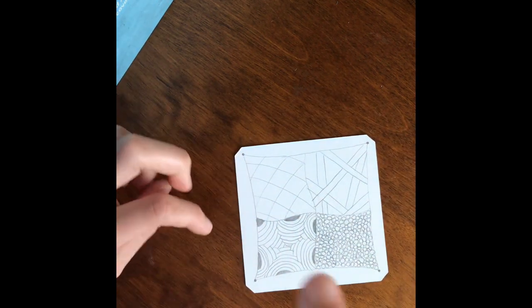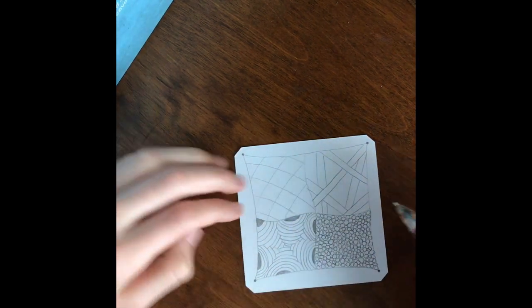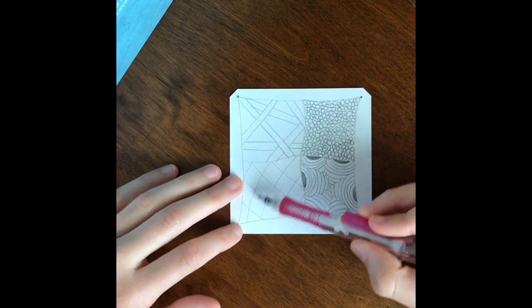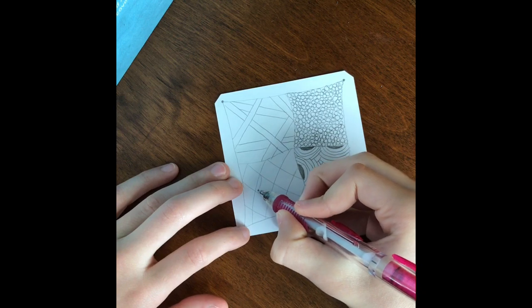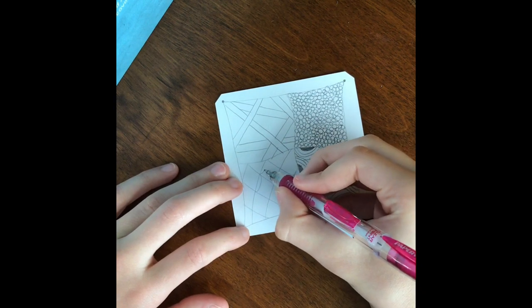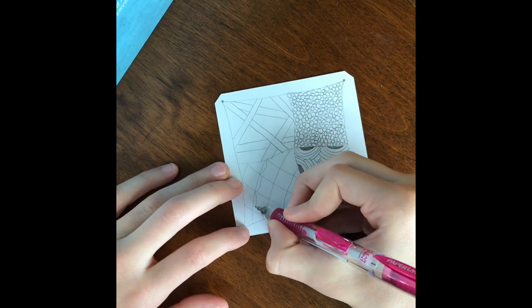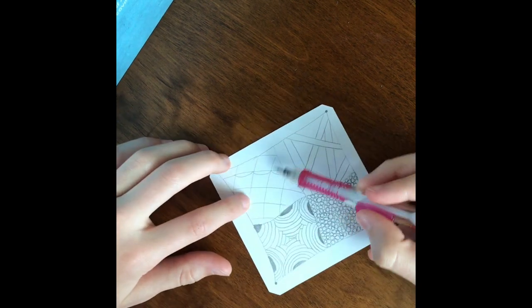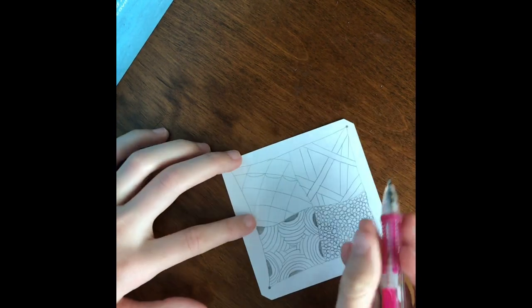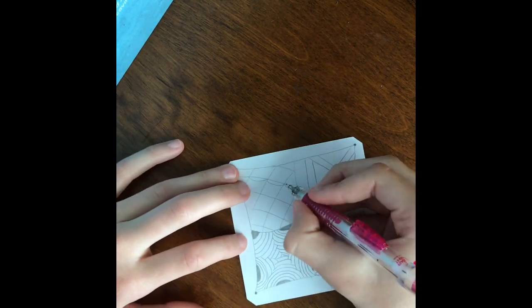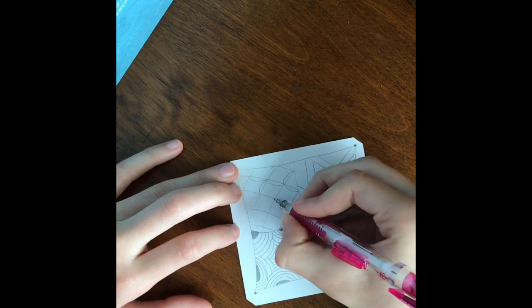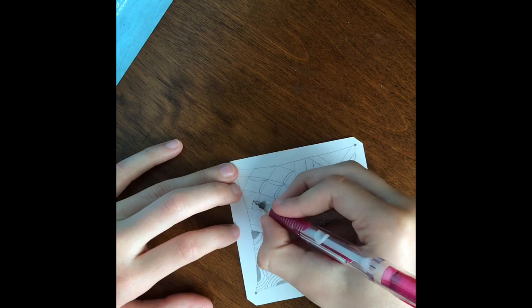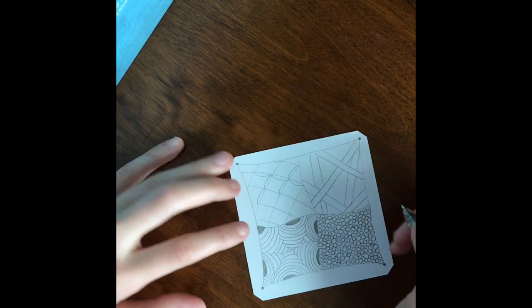Now you're going to use that grid to make this pattern. So on these lines going this way you're going to want to put a half moon under those. And on these lines going this way you're going to put the half moon to the left. So you're basically filling in. It's a very delicate looking tangle. Very beautiful.